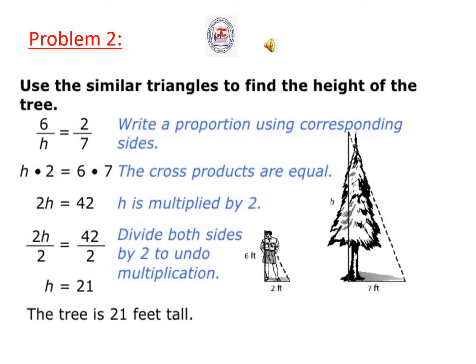Problem 2: Use the similar triangles to find the height of the tree. First step, write a proportion using corresponding sides. So 6 over h equals 2 over 7. The cross products are equal. 2 times h equals 6 times 7.